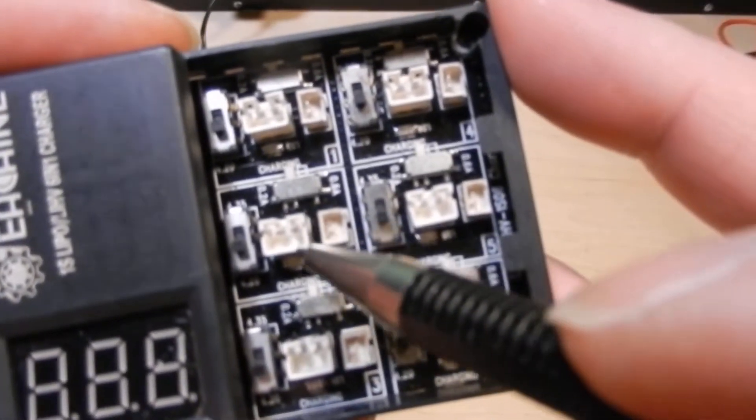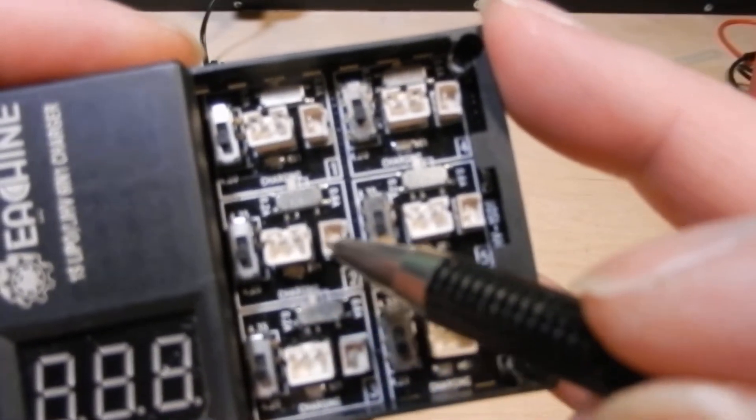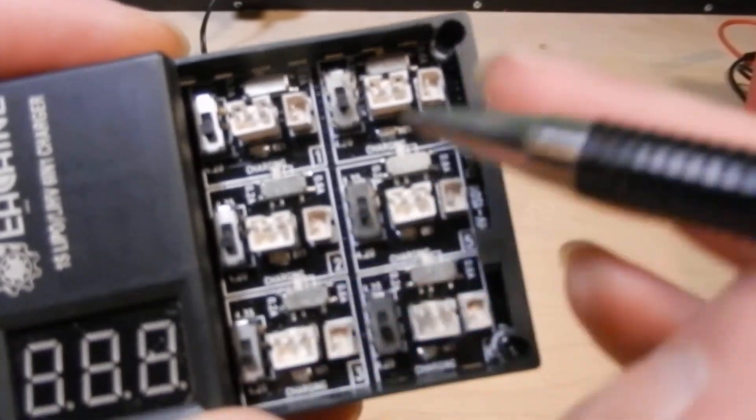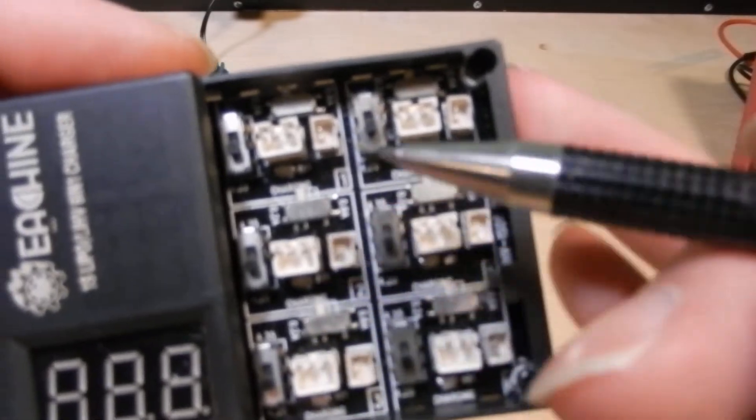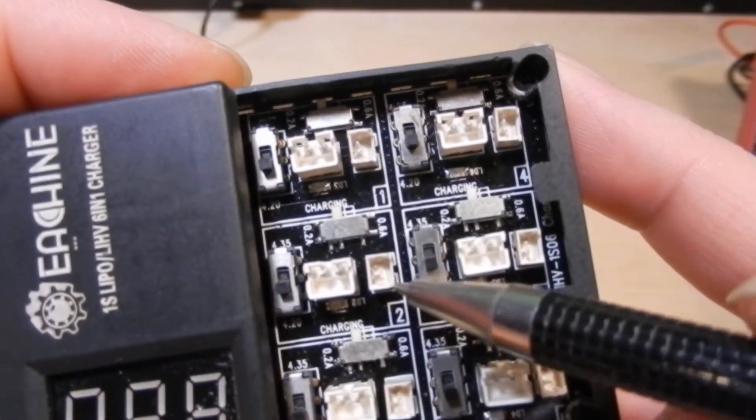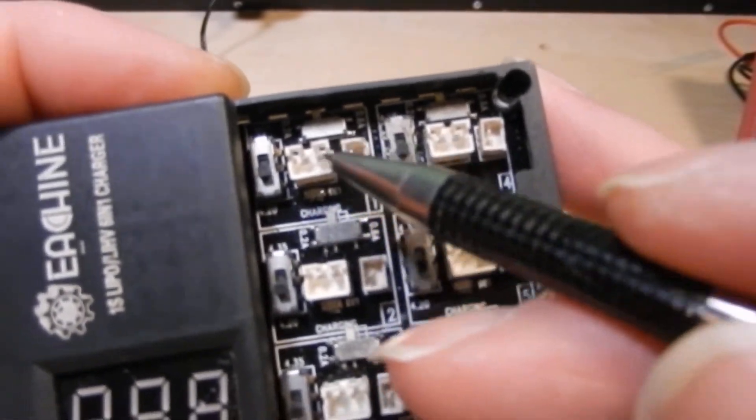But you can only charge one battery per channel. You cannot plug in both of these at the same time. You can do one here, one here, one here, and so on. You cannot do two per channel. So you can only charge six. You can charge one in here and then one down here on this one, but you can't charge here and here. You have to just pick one.